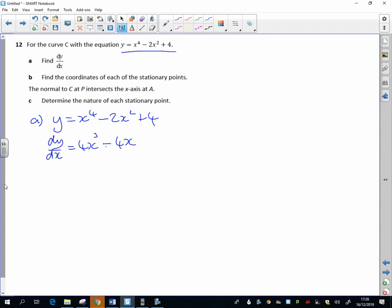So there you go, that's part A answered. We find the coordinates of the stationary points, so that's when dy/dx is 0. I can cancel through by 4, and I'll take out a common factor of 4x.